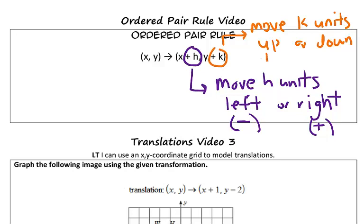Similarly, if we want to move up, we would have a positive K value. And if we want to move down, we'd have a negative K value.